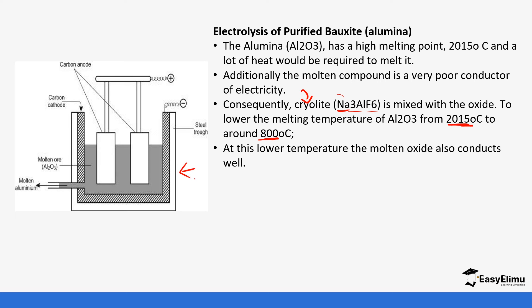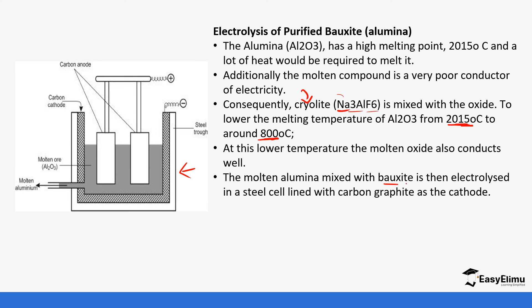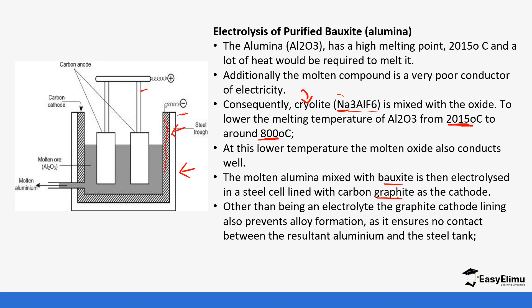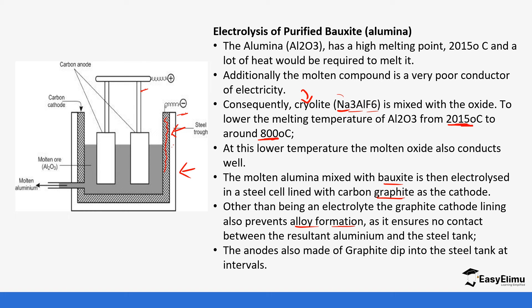This is the setup used for the electrolysis of aluminium oxide. The molten alumina is mixed with cryolite and electrolyzed in a steel can lined with carbon graphite as the cathode. The graphite-lined steel forms the cathode, and the graphite electrodes dipped into the molten solution form the anodes. The graphite cathode lining also prevents alloy formation with the steel. The anodes are also made of graphite and are dipped into the steel tank at intervals.